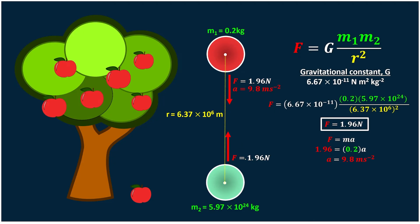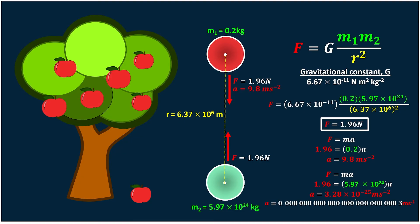Now we wonder whether the Earth accelerates towards the apple. We know it's impossible, but let's use calculation to prove it. Using Newton's second law F equals ma, because the Earth has such a massive mass, the acceleration turns out to be extremely small — literally equal to zero. This explains why the Earth does not accelerate towards the apple.